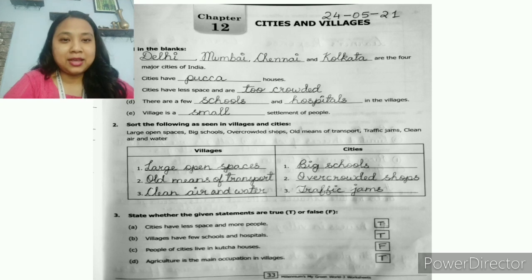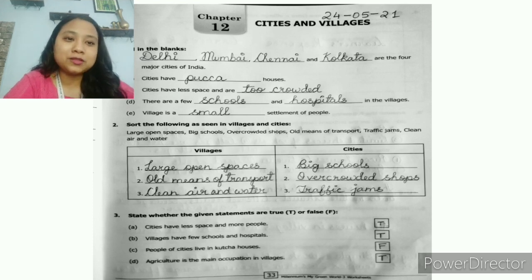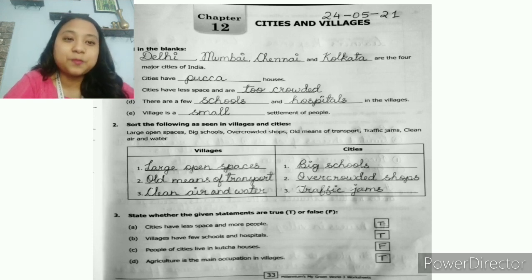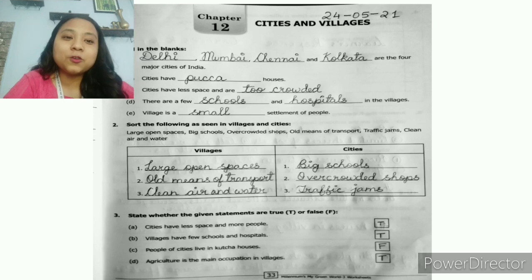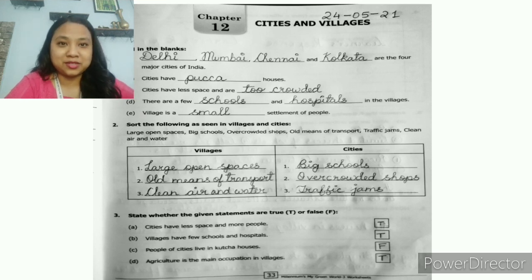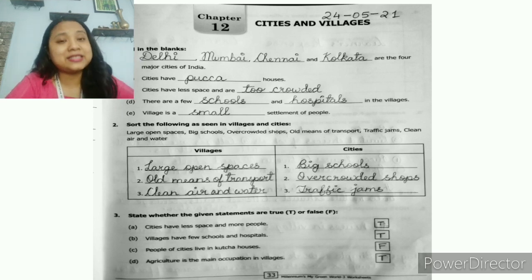Moving on to question number three: state whether the given statements are true (T) or false (F). Statement A: Cities have less space and more people — True. The space is less but the number of people dwelling in the cities is quite high, that is why cities are very populated. Statement B: Villages have few schools and hospitals — True. Compared to cities, villages have very few schools and hospitals, so people from villages have to come to the cities for better healthcare and higher education.